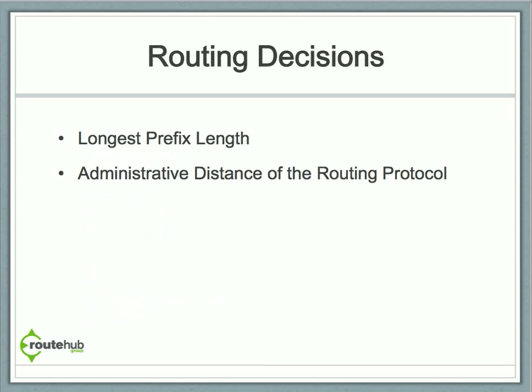Now for routing decisions — this is a concept that is not always fully grasped. A lot of people focus very heavily on administrative distances, but routing decisions are mainly done by looking at the route with the longest prefix length. If there are multiple routes with the same prefix length, then the router will use the administrative distance rule.